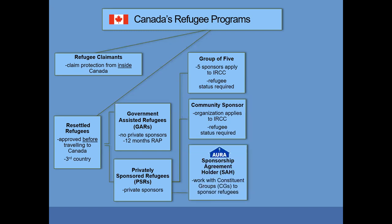Aura is a Sponsorship Agreement Holder, also known as an SAH or a SAW. We work with many different sponsor groups or constituent groups to sponsor refugees through the private sponsorship program, and we work with different types of applications.